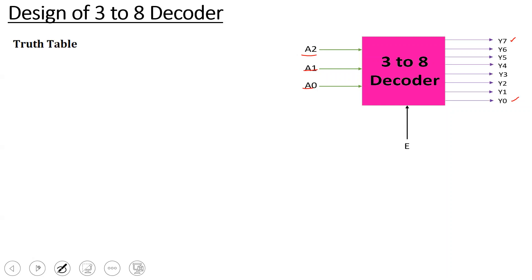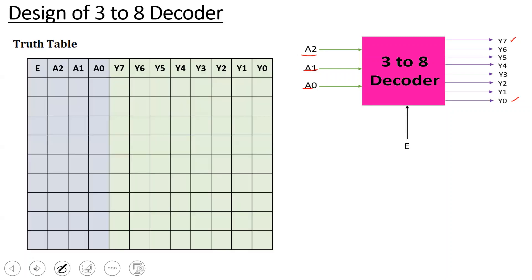Now the truth table has inputs A2, A1, A0 — that is 3 inputs — and outputs Y7 to Y0, which are 8 outputs. When enable is 0, the output is 0 for all input combinations. When enable is 1, the outputs are activated.